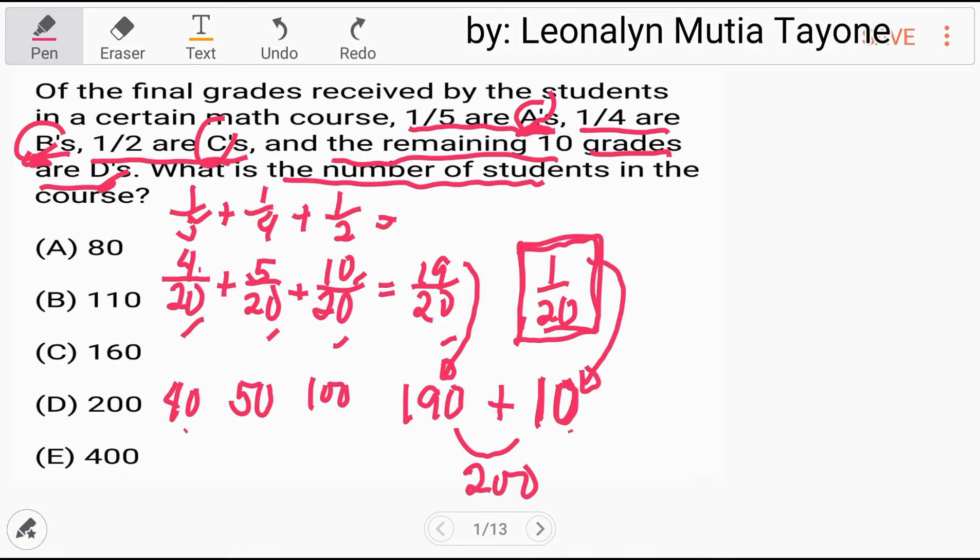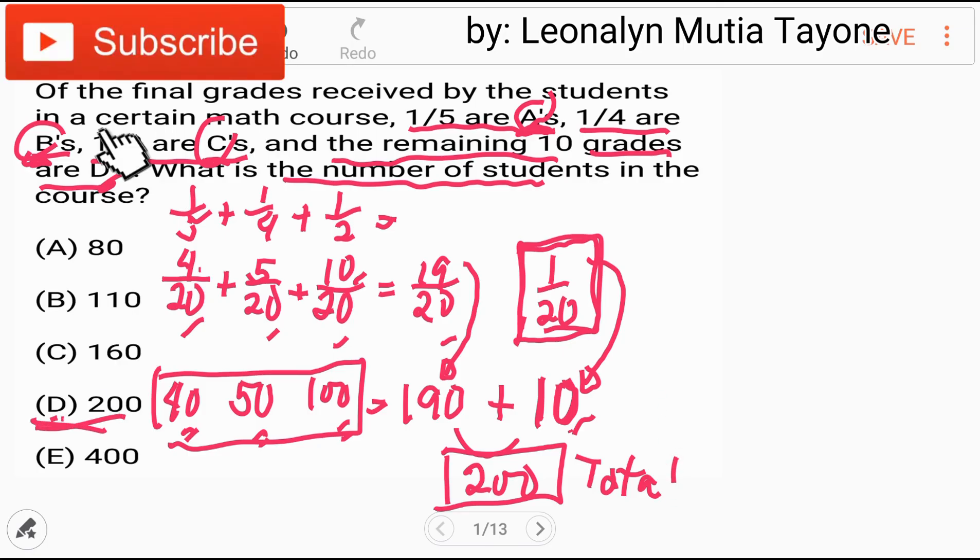Kung ilan yung 4, 40. Kung ilan yung 5, 50. Kung ilan yung 10, 100. Kung i-add mo yan lahat, this is 190. So i-add mo sa 10, that is 200. Yan yung total, at yan na yung sagot. 200. Thank you.